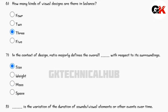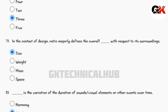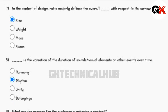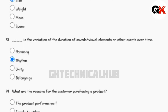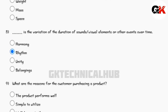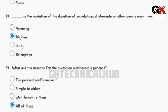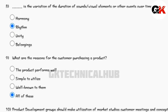The context of design ratio majorly defines the overall and TAS with respect to its surroundings. TAS is a variation of the duration of sounds, visuals, elements or other events over time. What are the reasons for the customers purchasing a product?